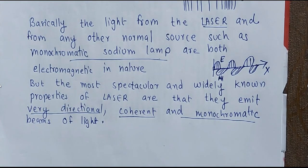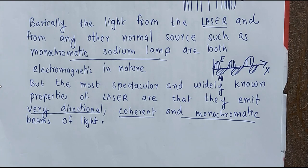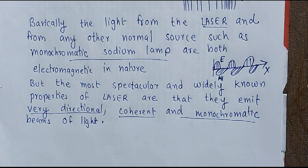In day-to-day life, we see sodium lamps used as street lights. Wherever you see yellow color emitted from street lights, that is the sodium vapor lamp. Laser, on the other hand, is typically used in research and many applications such as surgery. So the main properties of laser are: it is highly directional, coherent, and monochromatic. We will see all these properties one by one in the next videos. This is the introduction to laser.